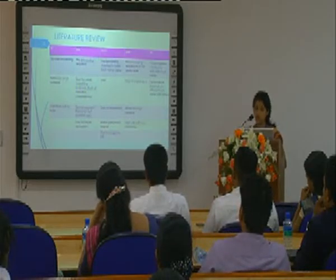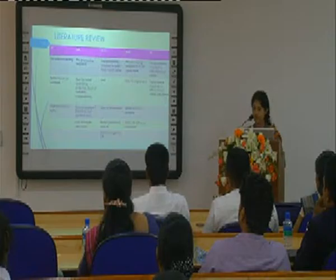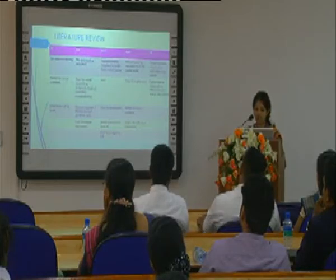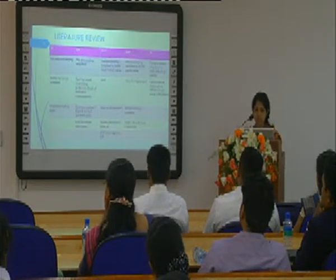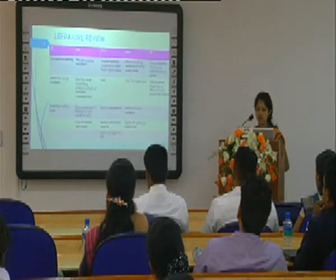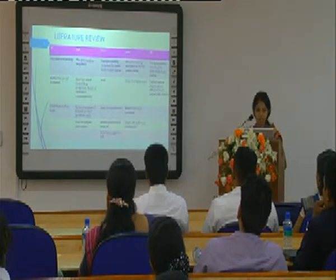The Boyer-Moore algorithm requires a pre-processing stage to create the bad match table and the good shift table. It is best for usual searching purposes because of the lack of needless comparisons. It requires some additional space based on the text or pattern size, and is fast for larger alphabets. The Boyer-Moore Horspool algorithm also requires a pre-processing stage to create a bad match table. It is very fast and easy to implement, and performs better than the brute force algorithm. Searching starts from right to left.